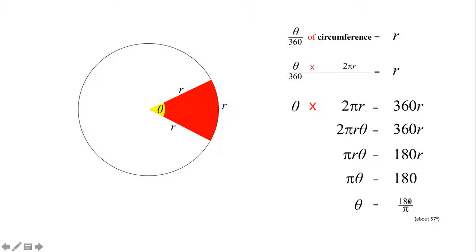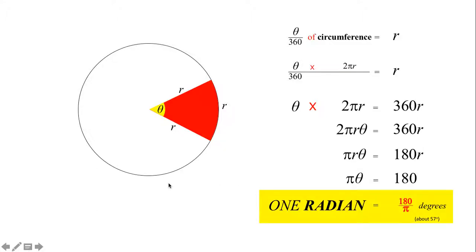Dividing both sides by π, we get theta equals 180 over π, and 180 over π is something we can work out on the calculator — it's about 57. So that angle is about 57 degrees, and exactly 180/π degrees. The angle that makes the arc length the same as the radius is about 57 degrees, exactly 180/π, and we call that one radian. One radian is the angle that does that.